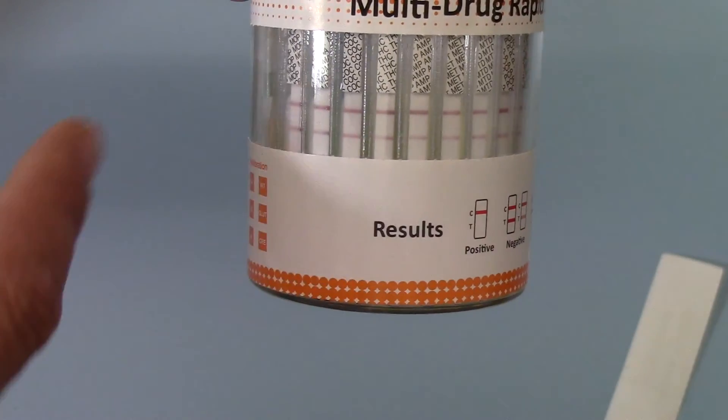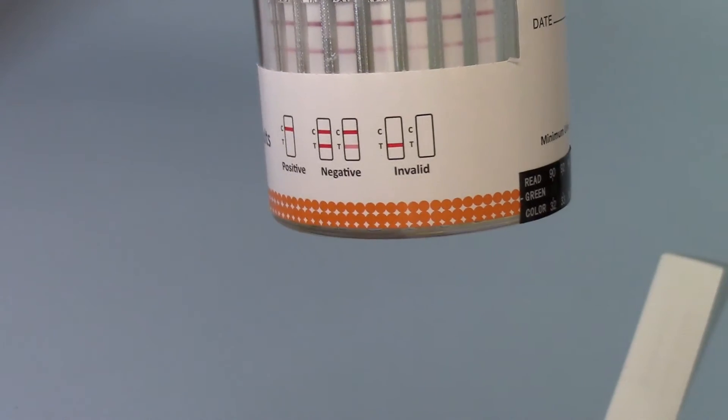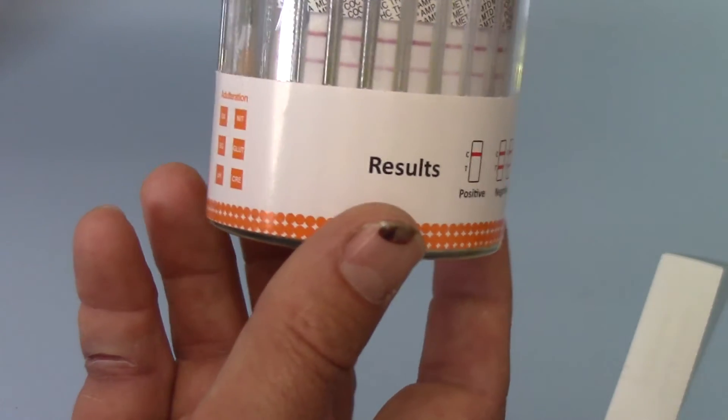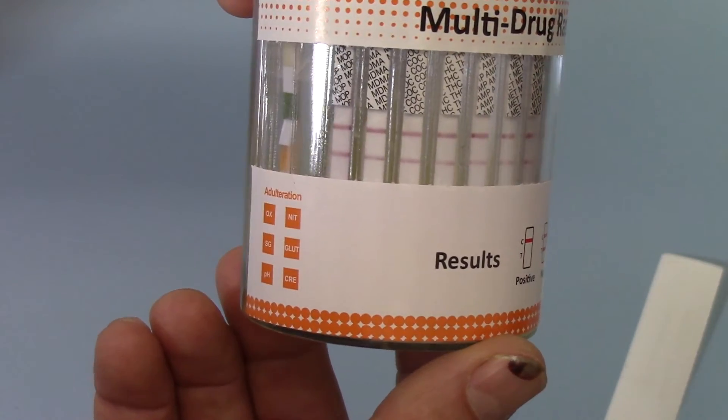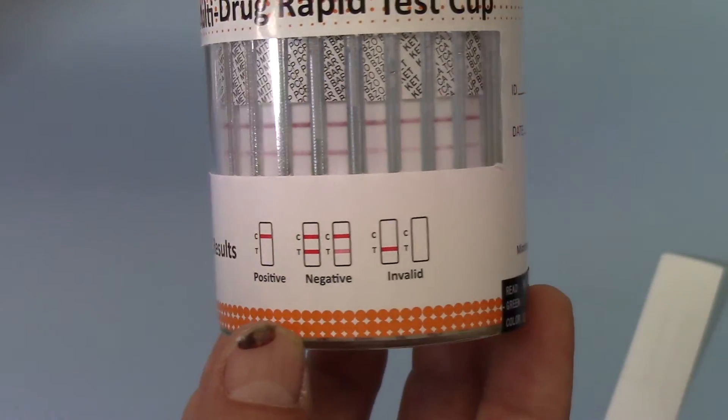You're looking for a control line that forms nearest the top and the presence or absence of a test line, which forms nearest the urine in the bottom of the cup. And on this all negative screen, you can see that you've got beautiful control lines and test lines showing against every abbreviation there.